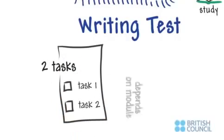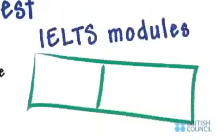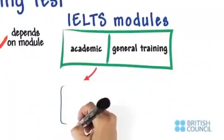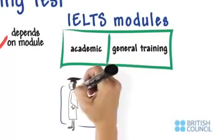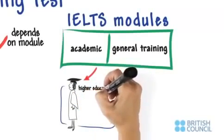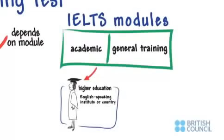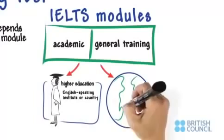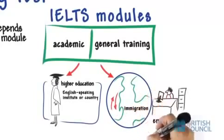The first task differs depending on the module you are taking. There are two IELTS modules. The IELTS academic module is generally taken by anyone intending to pursue higher education studies in an English-speaking institute or country. The IELTS general training module is generally taken for immigration or employment purposes.